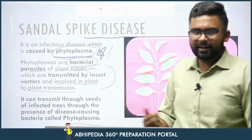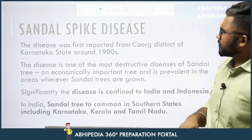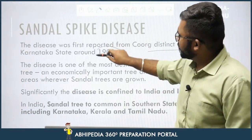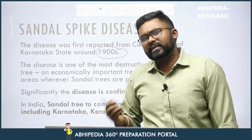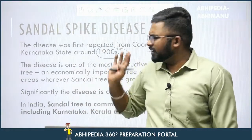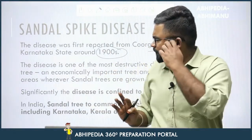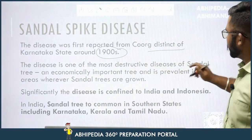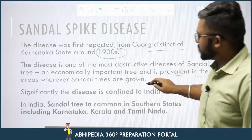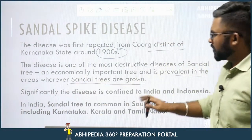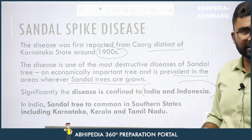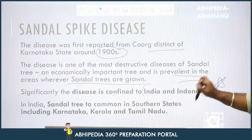The disease was first reported in the Coorg district of Karnataka state around 1900. It is one of the most destructive diseases of the sandal tree, which is an economically important tree. The disease is prevalent in areas where sandal trees are grown significantly.